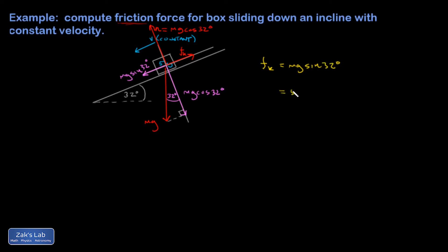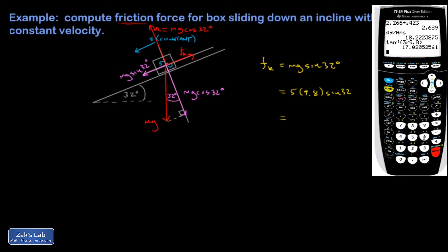And that's 5 times 9.8 times the sine of 32. We'll pop up our calculator real quick. 5 times 9.8 times the sine of 32.